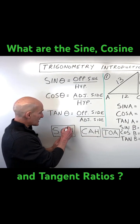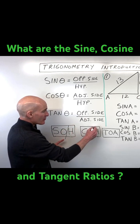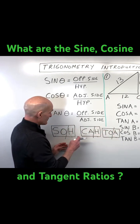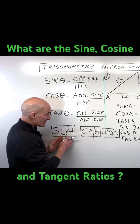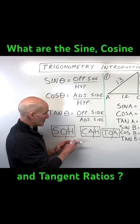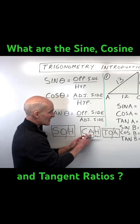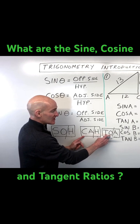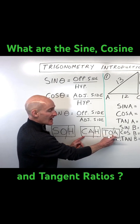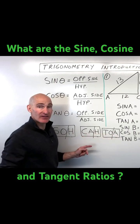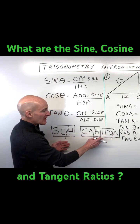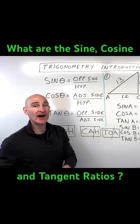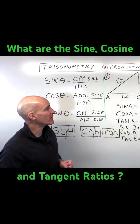It's always the second letter divided by the third. So the sine is the opposite side divided by the hypotenuse, the cosine is the adjacent side divided by the hypotenuse, and the tangent is the opposite side divided by the adjacent side. If you can just write that down and remember SOHCAHTOA, you're halfway there.